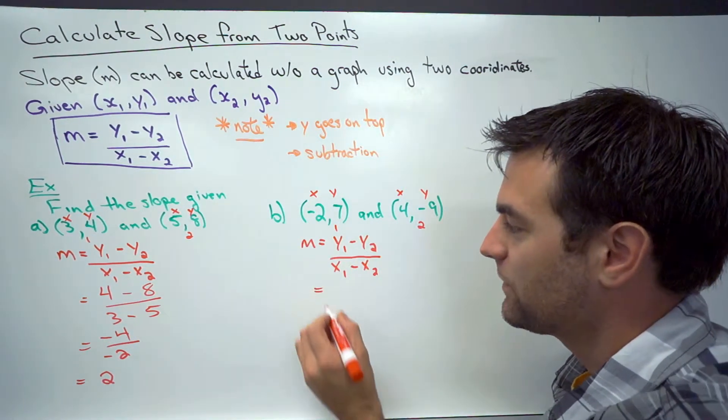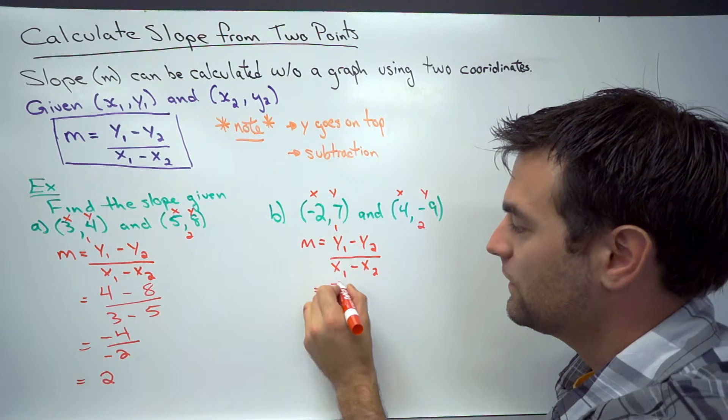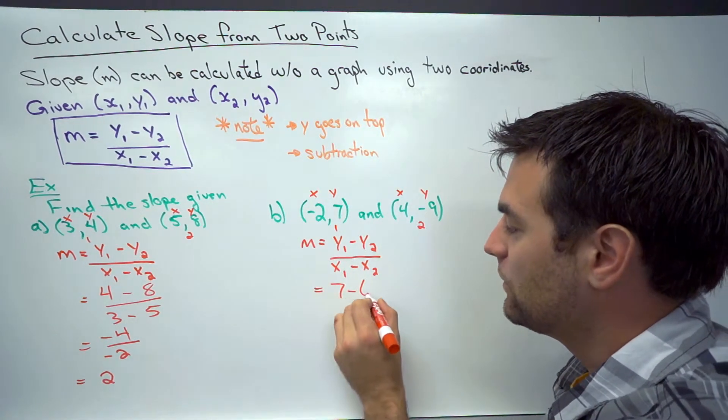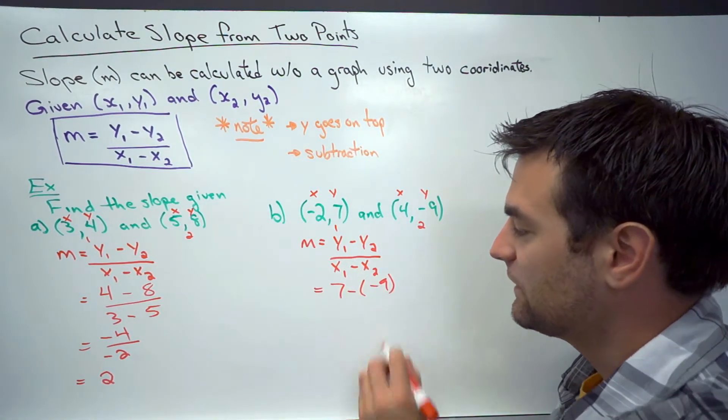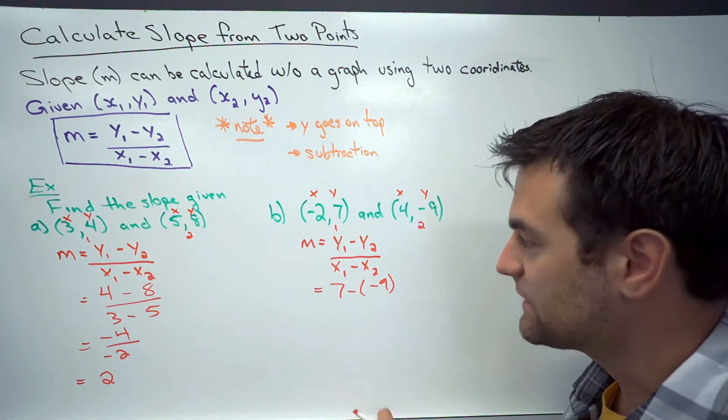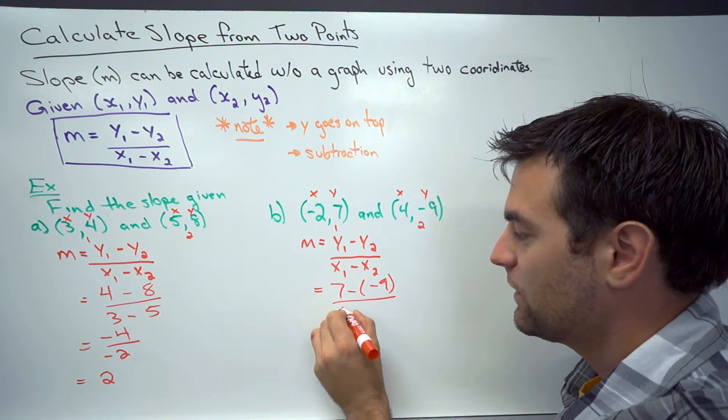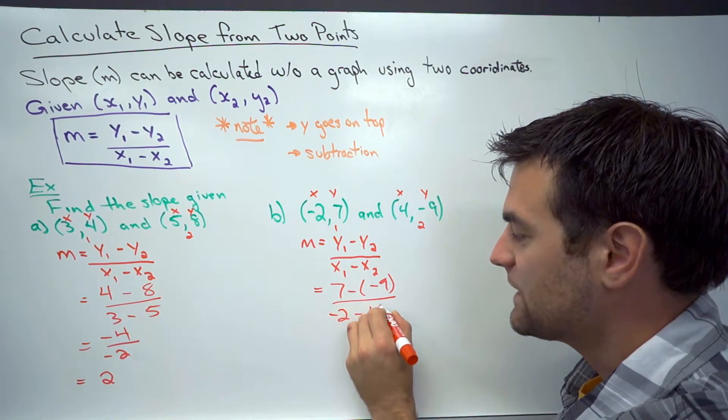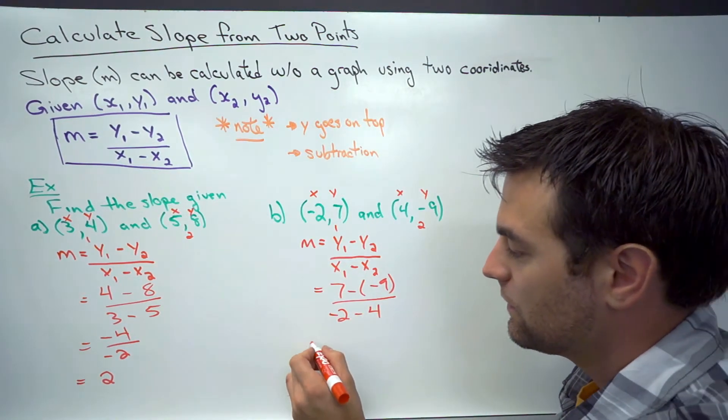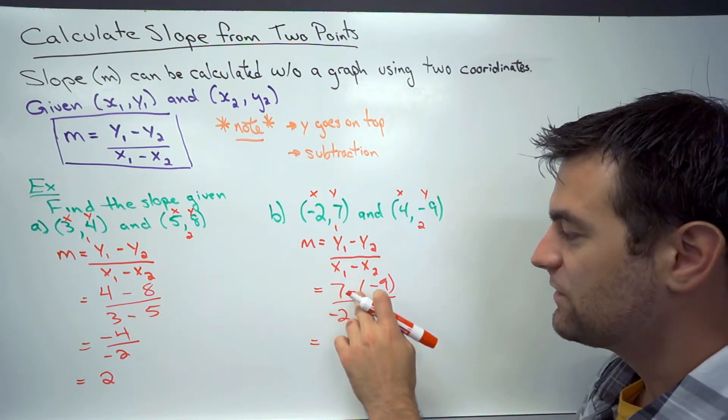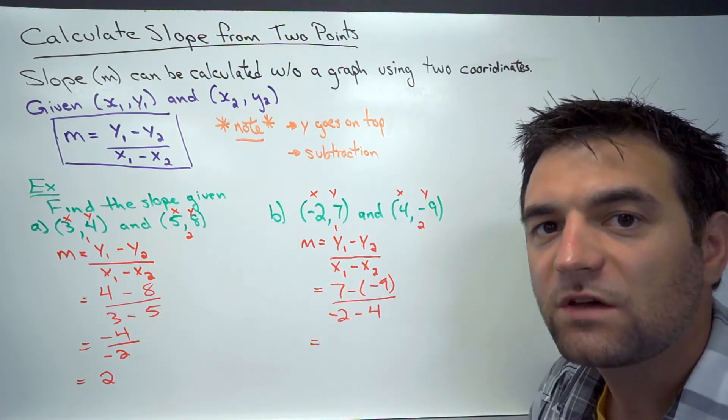So filling in my formula, y1 minus y2. Now notice it's minus negative 9, so I put the negative 9 in brackets there, over x1 minus x2.